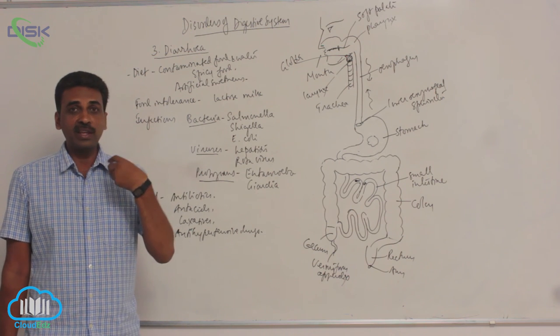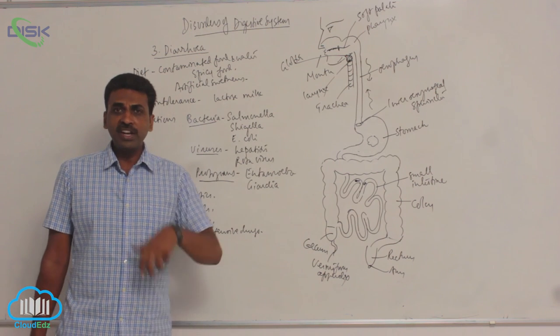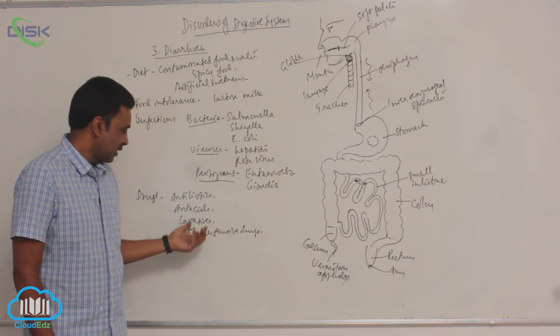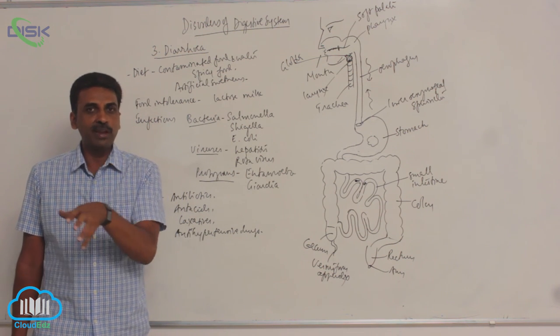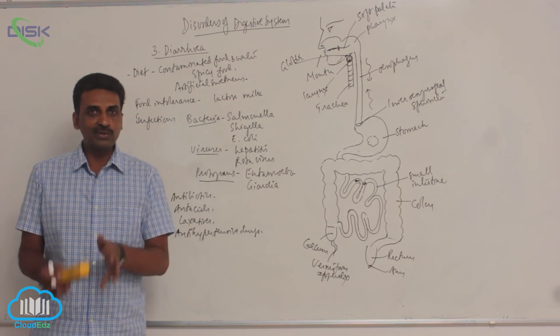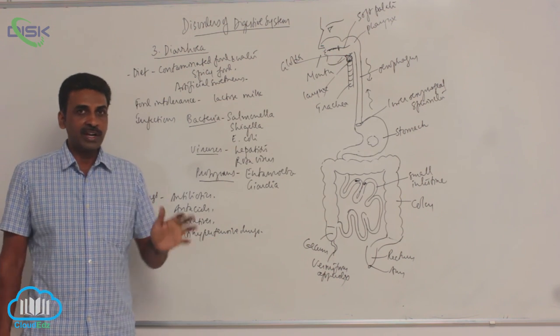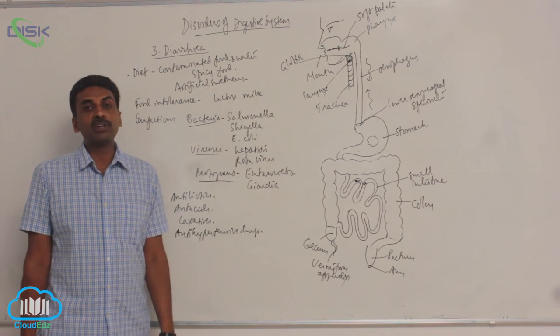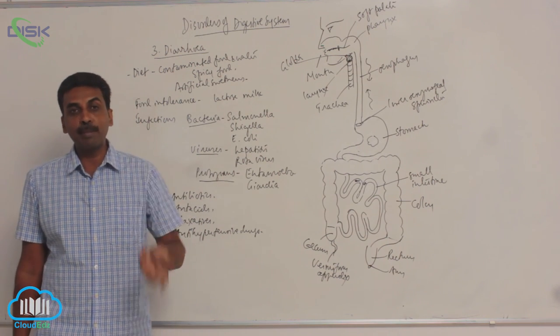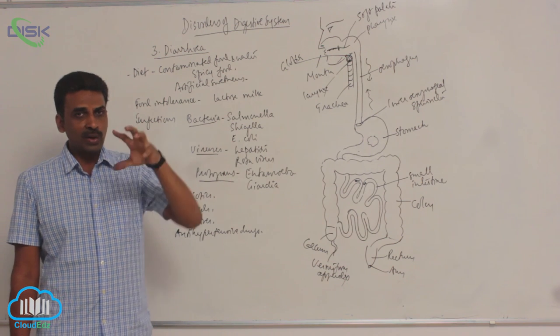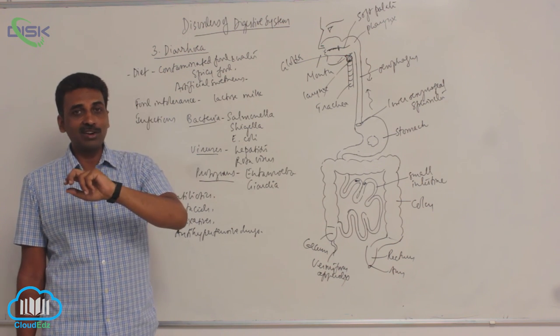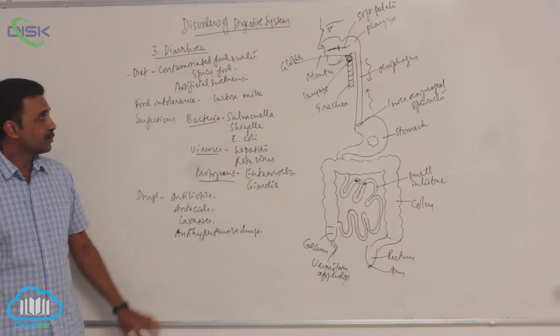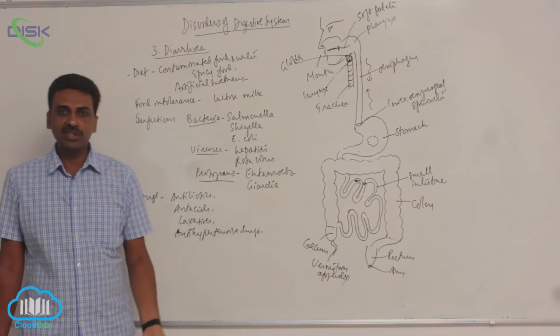Laxatives like castor oil is the laxative. You take honey in excess quantity, it's a laxative. But we take laxatives to avoid constipation. Laxative, a substance which induces free motion. It actually is causing diarrhea. Antihypertensive drugs: hypertension, elevated blood pressure is hypertension. To reduce hypertension we use certain drugs. Those drugs, they cause diarrhea. So under variety of conditions, there is diarrhea.